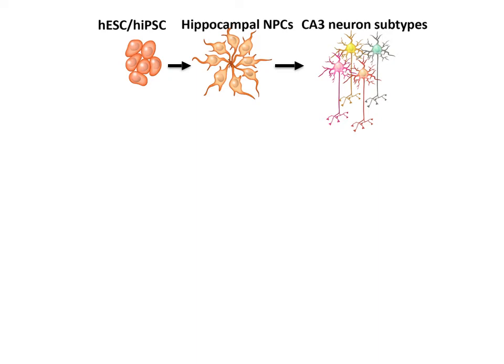Neural connections underlie human brain function, and dysfunction of neural connections correlates with the progression of neurological disorders. However, a robust in vitro assay to study lineage-specific human neuronal connections remains an experimental challenge.